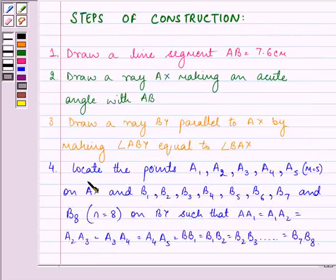Now we need to locate points. Since we're dividing in ratio 5:8, M is 5 and N is 8. On AX we mark 5 equal parts, and on BY we mark 8 equal parts, such that all parts are equal to each other.